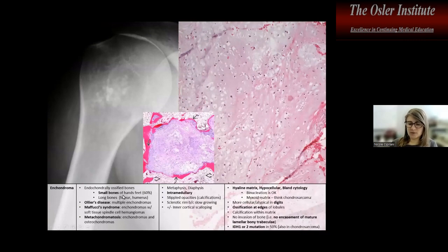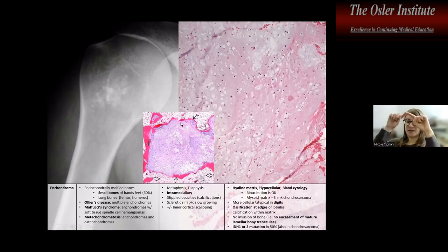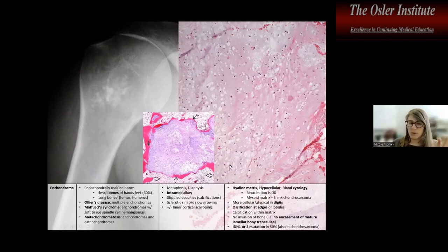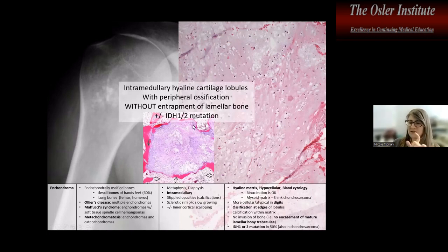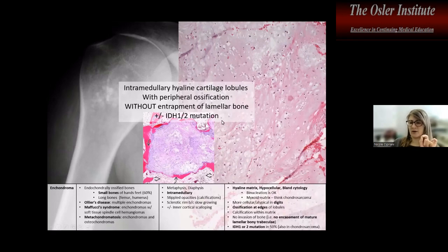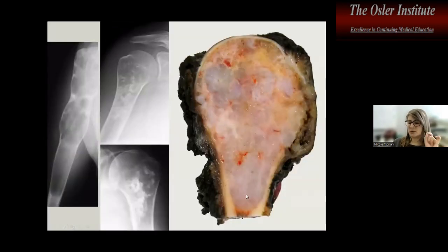Enchondromas in the marrow can be in small bones or longer bones and are associated with various syndromes. They tend to show stippled calcifications on X-ray — ossification of the periphery of cartilaginous lobules — without entrapment of bone. Both enchondromas and chondrosarcomas of the marrow can have IDH1/IDH2 mutations, so this is not diagnostic of benign vs. malignant, but confirms a primary cartilaginous proliferation.